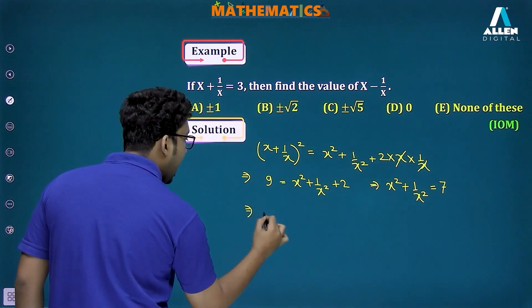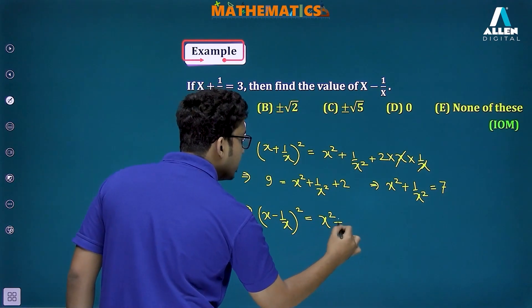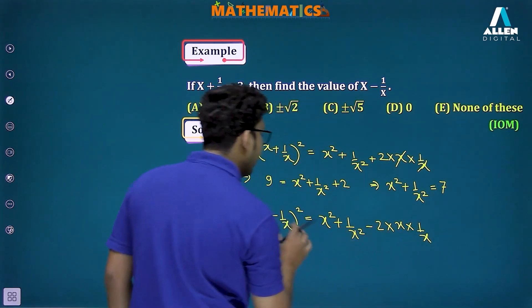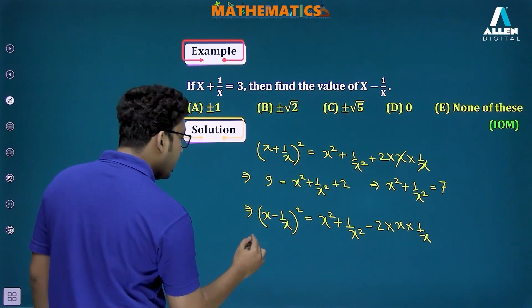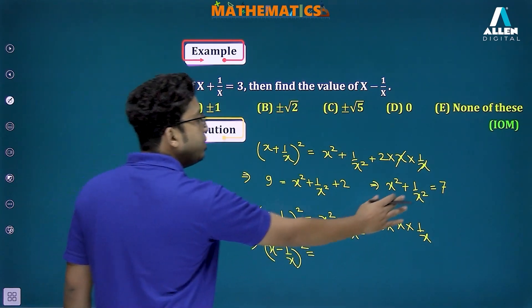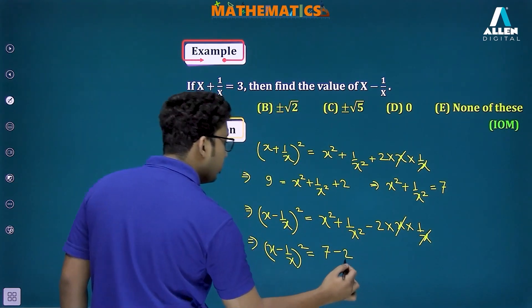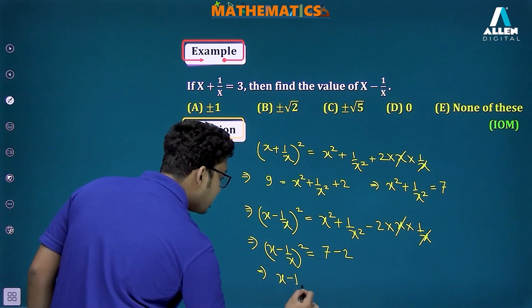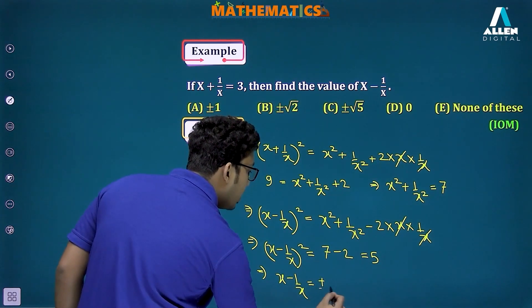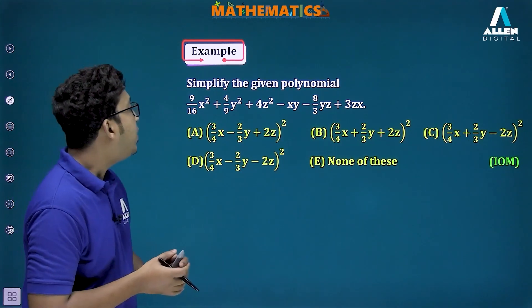Now write (x-1/x)² = x²+1/x²-2·x·(1/x), applying the (a-b)² identity. So (x-1/x)² = 7-2 = 5. Therefore x-1/x = ±√5.